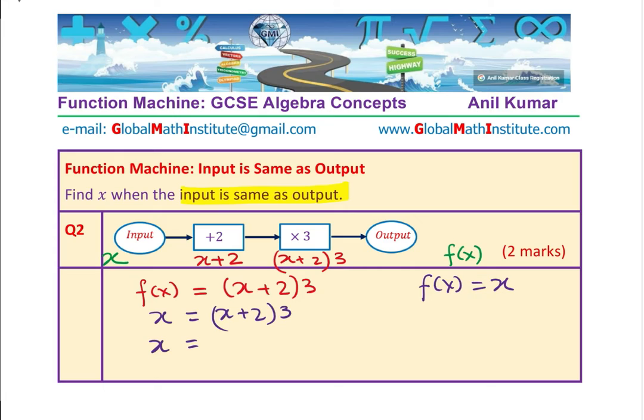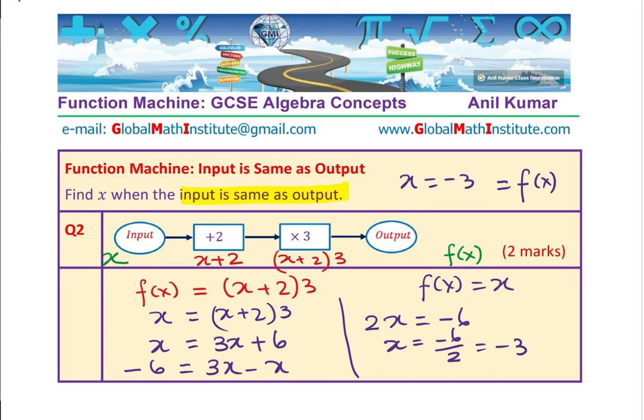I can expand and simplify. 3 times x is 3x, times 2 is 6. Bringing the terms together, we get minus 6 equals to 3x minus x. Taking to the other side, 3x minus x is 2x and that is equal to minus 6. x will be half of minus 6, which is minus 3. So we get x equals to minus 3. If x is equal to minus 3, in that case, that is also equal to f of x. In function notation, we could also write this as f of minus 3 is minus 3. We get an idea. When the input is minus 3, the output is also minus 3. You can check the result.